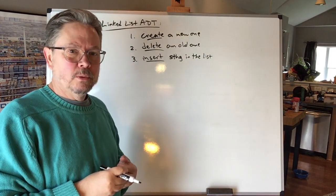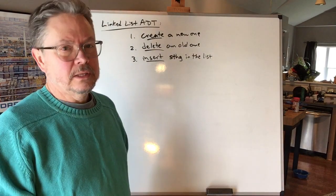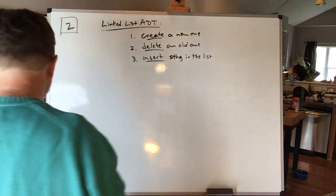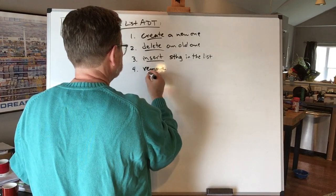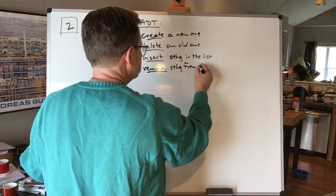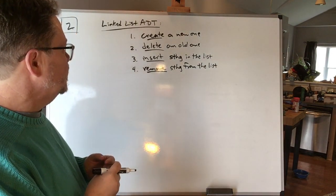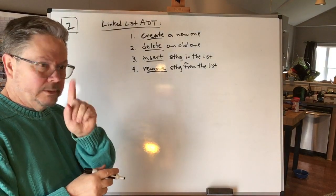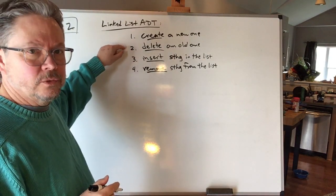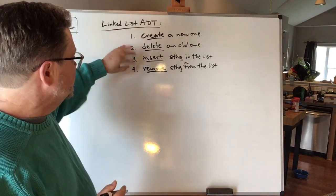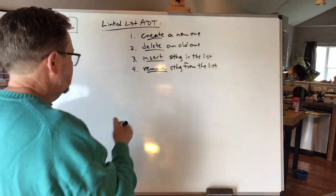These operations are not in any particular order — except for the first two: we've got to make one before we can do any of the rest, and the last thing we do had better be to delete it. So the lifecycle is: make one, put stuff in and take stuff out as needed, and then get rid of it when we're done.